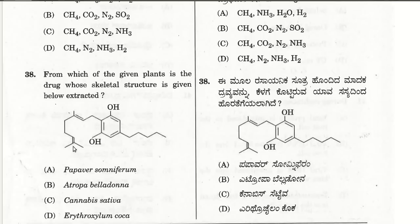The thirty-eighth question: from which plant is the given drug extracted? The answer is Cannabis sativa, from which cannabis (ganja) is extracted. The structure shown is for Cannabis sativa, so the third choice is the answer for question 38.